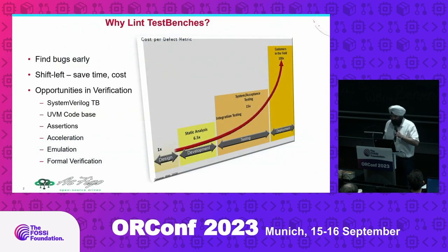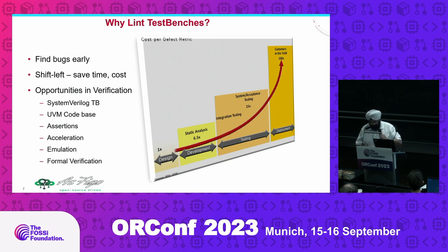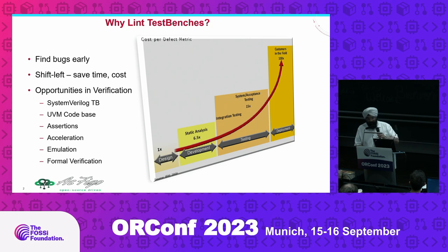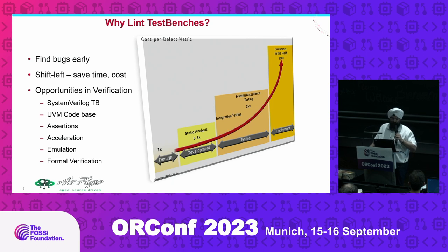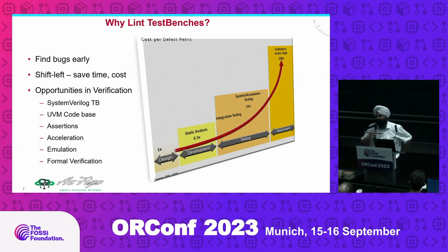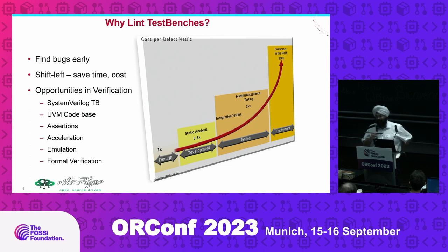The question is: why do we really care about linting of test benches? If you see the design cycle — if you find a bug in design early, it's a 1x approach, but if you go to the development side it may reach 6.5 times, and at integration with complete SOC level it leads to 15x time for development. Once it gets to the client in the field, the cost is too much. So make sure to find more issues on the test bench side early. It's good to use SystemVerilog. I'm also one of the SystemVerilog creators, but SystemVerilog has a lot of opportunities to fail also.